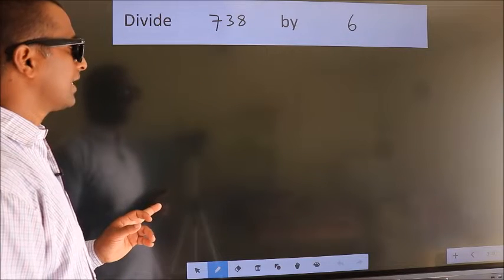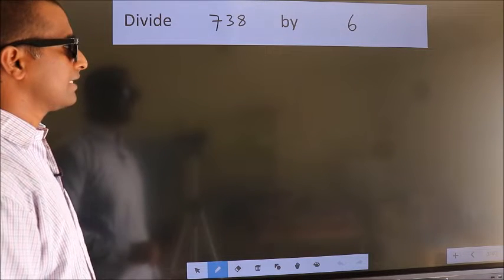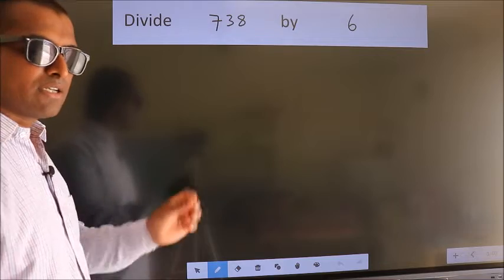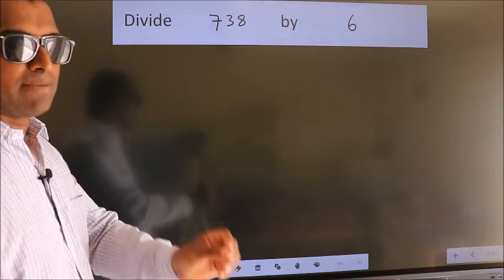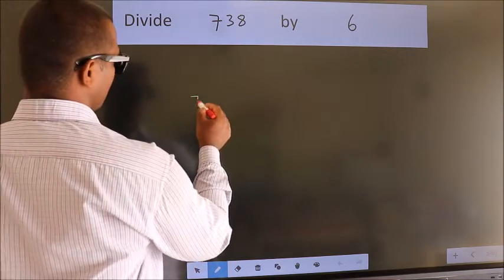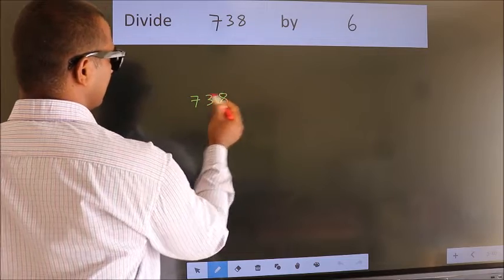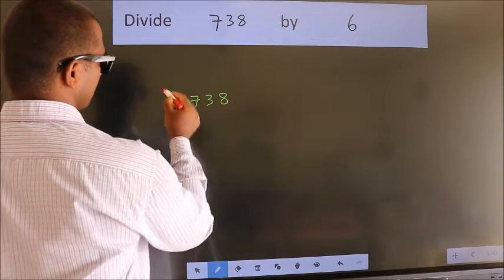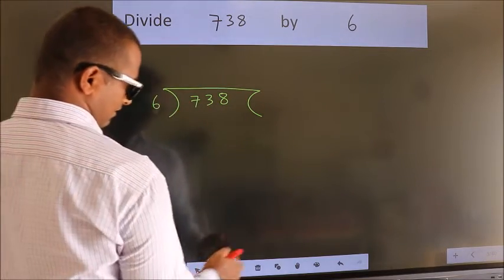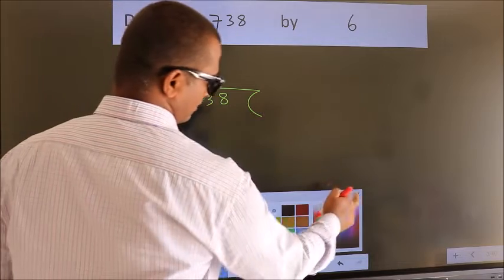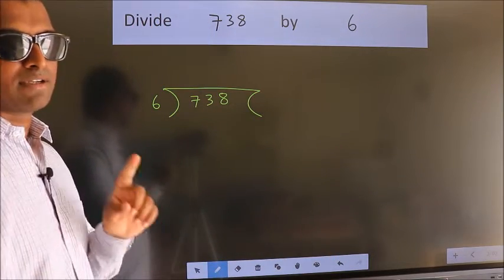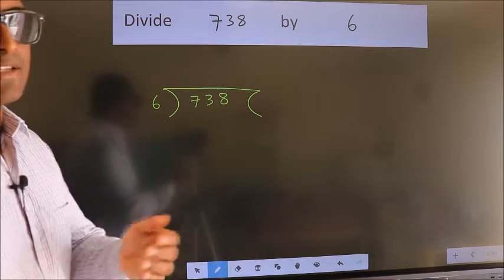Divide 738 by 6. To do this division, we should frame it in this way: 738 here, 6 here. This is your step 1.